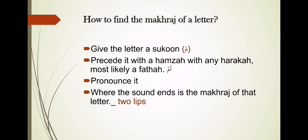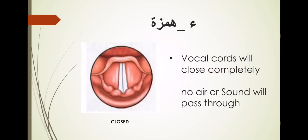For Meem: pronouncing 'am' shows you can only complete it by closing your lips — so the lips are the Makhraj of Meem. For Fa: pronounce 'af' — the bottom edge of the upper incisors touches the inner wet area of the lower lip. That is the Makhraj of Fa. Now we apply this method to Hamza, the first letter from Aqsa al-Halq.